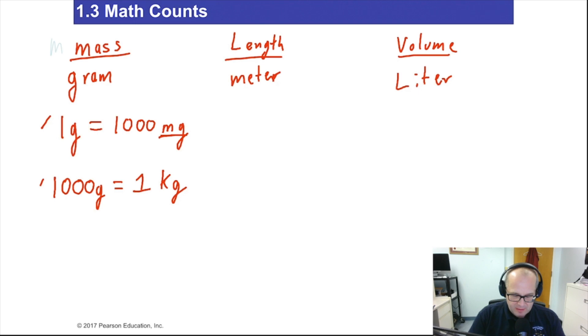Now length is a meter. Generally speaking, we have one meter equals 1000 millimeters. So notice milli, milli, milli means you divide by a thousand. Or in other words, there's a thousand of these and one of those. 1000 millimeters in one meter.